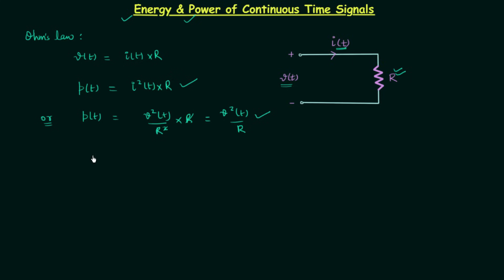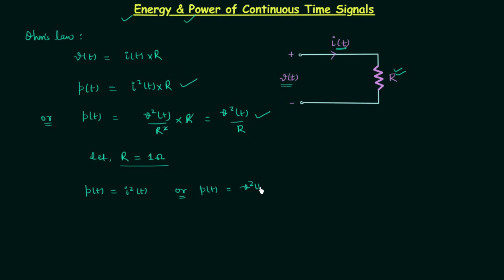We will assume resistance R is equal to 1 ohm. Remember this point. As R equals 1 ohm, from the first expression the instantaneous power P(t) is equal to I²(t), and from the second expression it is equal to V²(t). So instantaneous power is equal to V²(t) or I²(t).